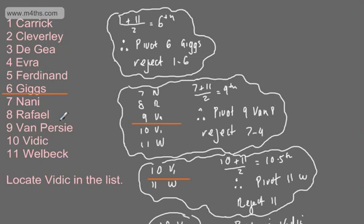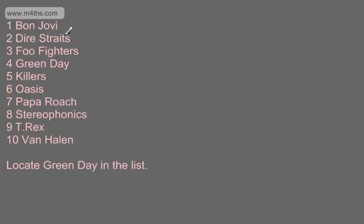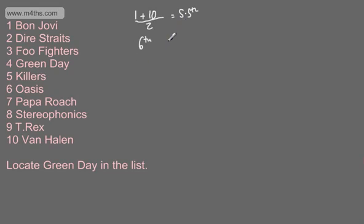That's an example with 11 names. In this list we've got a list of bands: Bon Jovi, Diastrates, Foo Fighters, Green Day, Killers, Oasis, Papa Roach, Stereophonics, T-Rex and Van Halen. And we're asked to locate Green Day in the list. This time we have 10 names.